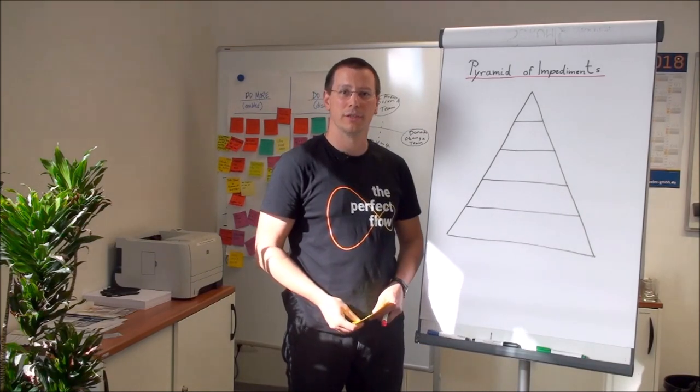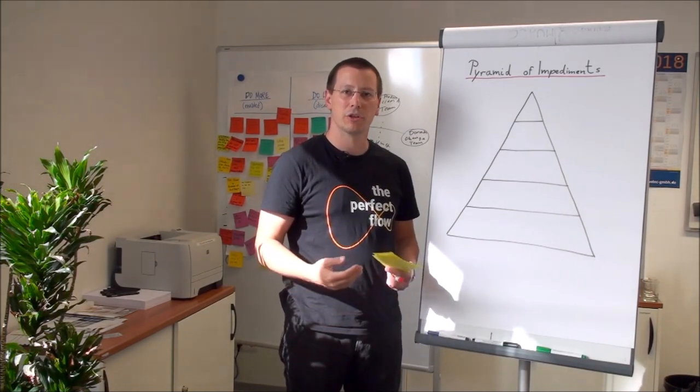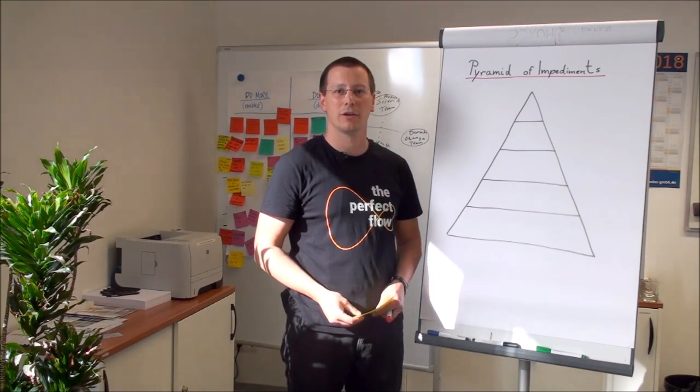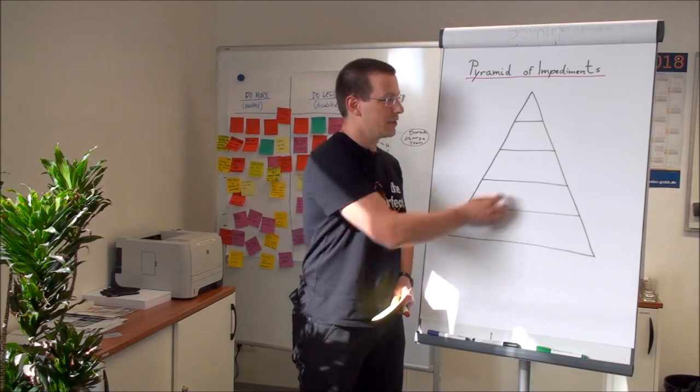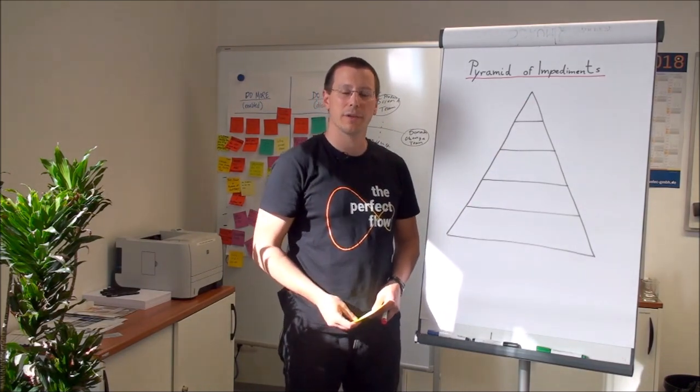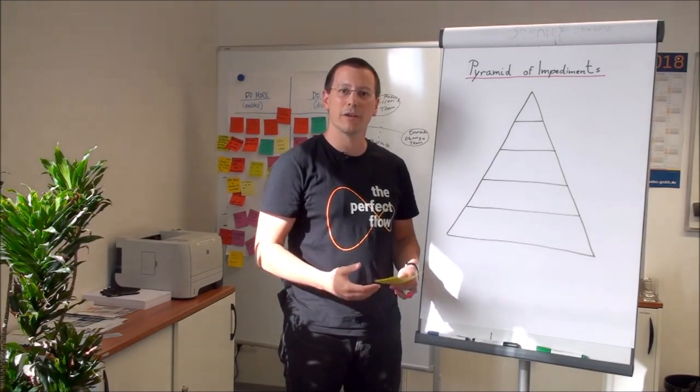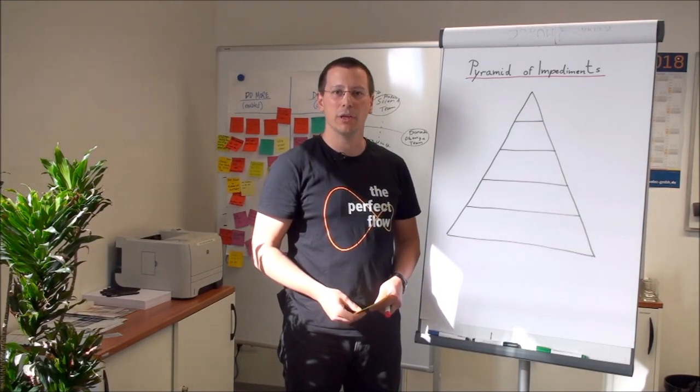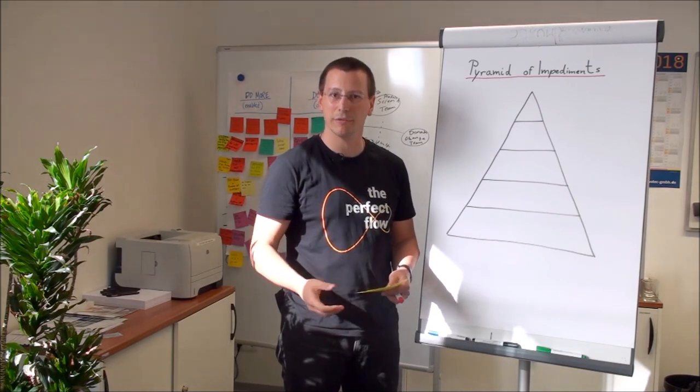This model developed after several years of experience when I came across a certain lifecycle of impediments in Scrum teams. You see this pyramid here? It represents the amount of time invested in the beginning of the lifecycle of a Scrum team into certain areas of impediments. Let me give you some more details.